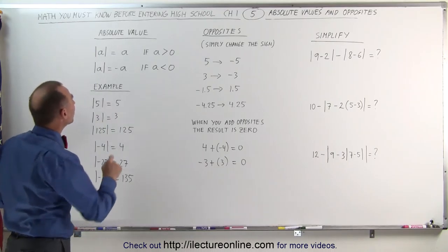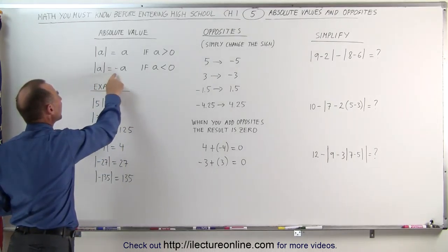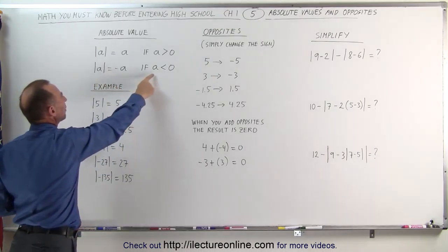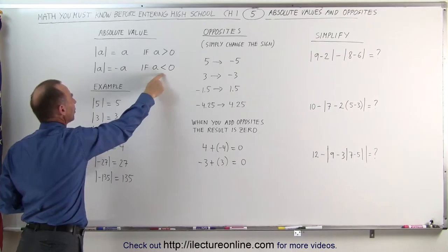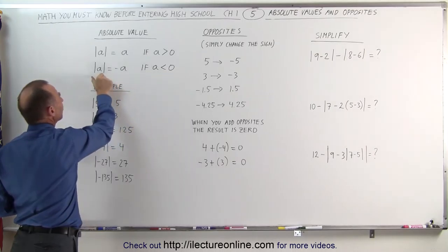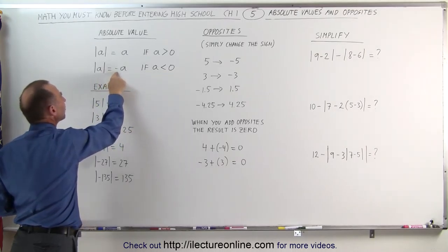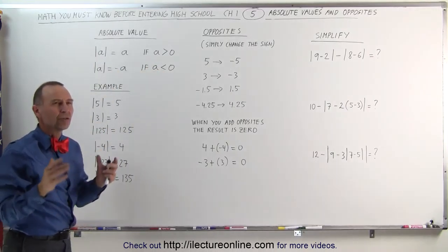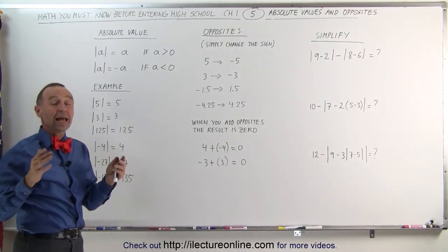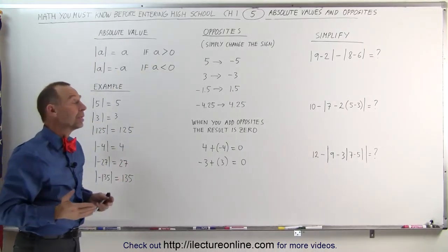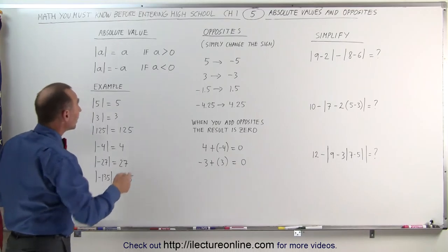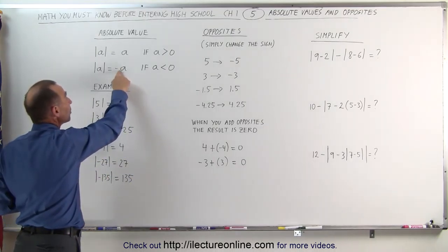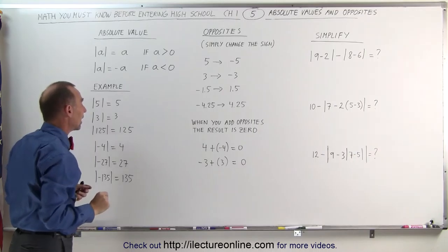But what happens when you take the absolute value of a negative number? What if a is less than zero? Then the absolute value of that number is the negative of that number. Now this definition is a little bit confusing, because you remember that the absolute value should give you a positive quantity. If a is a negative number and you put a negative in front of it, that turns into a positive number again.